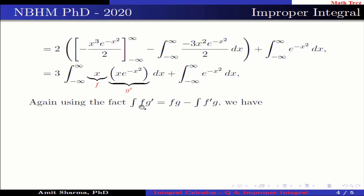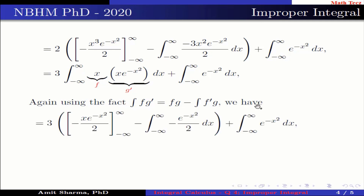Again using integration by parts, ∫f·g′ = f·g − ∫f′·g, we have 3·[−x·e^(−x²)/2]_{−∞}^{∞} − 3·∫_{−∞}^{∞} (−e^(−x²)/2) dx, plus ∫_{−∞}^{∞} e^(−x²) dx. Here f = x and the integral of g′ is −e^(−x²)/2. The derivative of f is 1. Substituting the limits, the boundary term becomes 0.